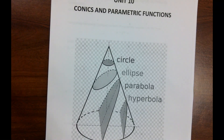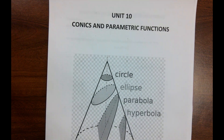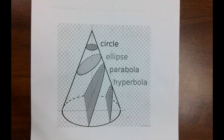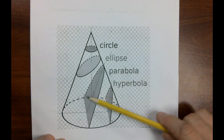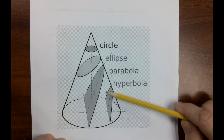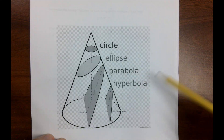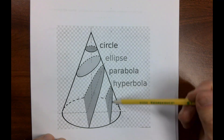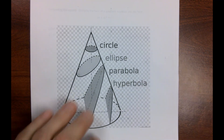The title is 'Conics and Parametric Functions.' You've got this cone and these cross-sections taken out of it: the top one's a circle, the second one's an ellipse, the third one's a parabola, and the fourth one's a hyperbola — though that's only half of a hyperbola. Anyway, let's not get too far into the cover page.